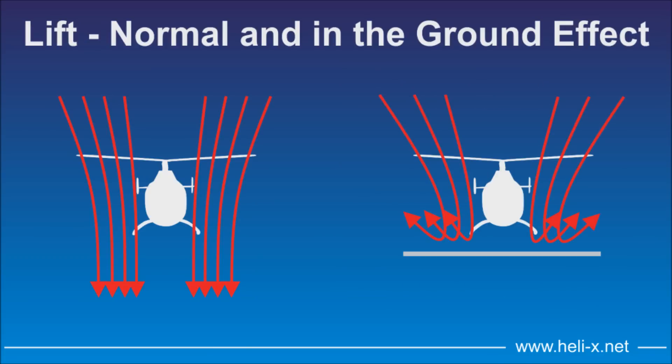Completely different is the situation when the helicopter is near the ground. The air cannot flow downwards, but will produce a kind of air cushion on which the helicopter hovers. We say the helicopter is inside the ground effect. The increase of lift is larger when the height of the helicopter is less. The ground effect is effective up to a height which is approximately the diameter of the main rotor.